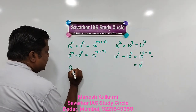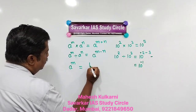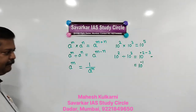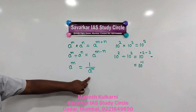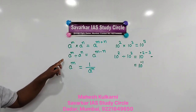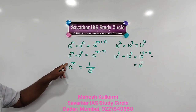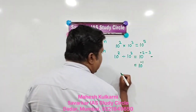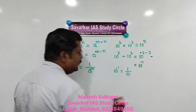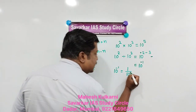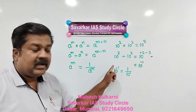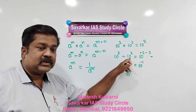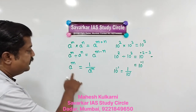Now can we calculate 10 raised to minus 1? Yes. A raised to minus M equals 1 upon A raised to M. So when A raised to minus M is at the numerator, when it comes to the denominator it becomes positive, and vice versa. On this basis, 10 raised to minus 1 equals 1 upon 10 raised to 1, which is simply 1 upon 10. The sign of the indices is inverted when moved between numerator and denominator.